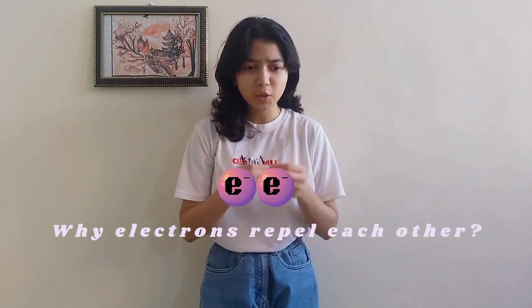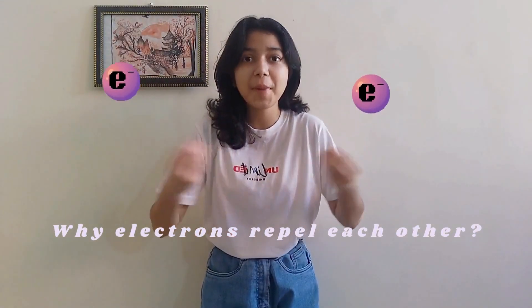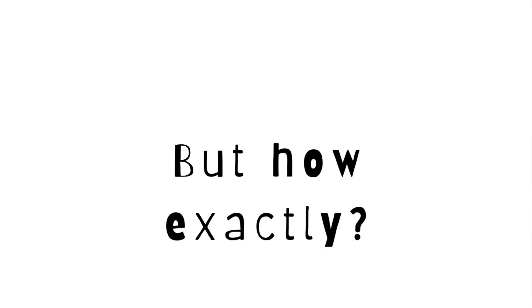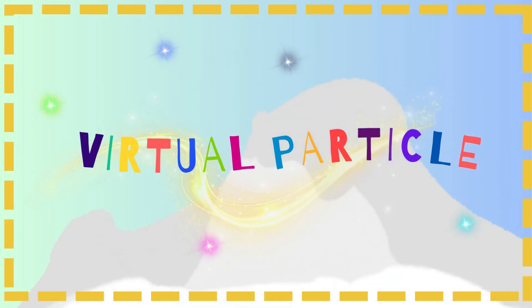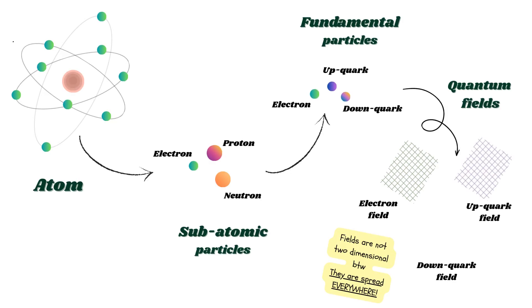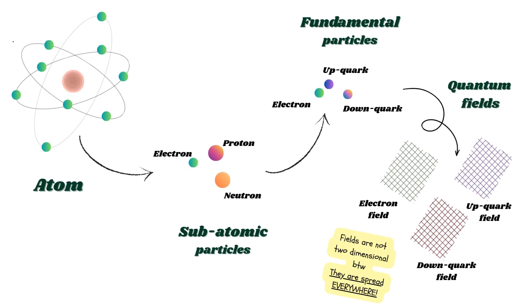I've always wondered why two electrons repel each other. They have equal charges, yes, but how exactly? They exchange a virtual photon — a type of virtual particle. But what is that?